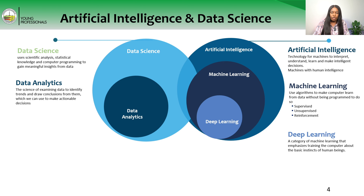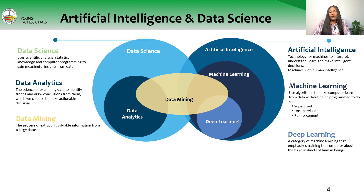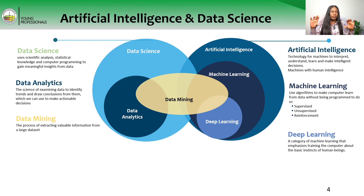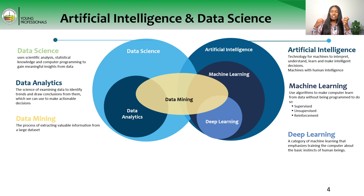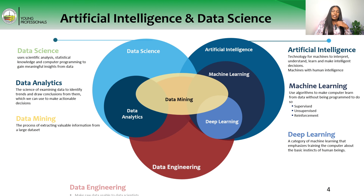We also have what we call data mining. As you can see from the diagram, it cuts across different fields — data science and machine learning. It is the process of extracting valuable information from big data. Some people confuse data mining with data analytics, but they are different: data mining focuses on extracting valuable information, while data analytics focuses on identifying trends and patterns in your data.